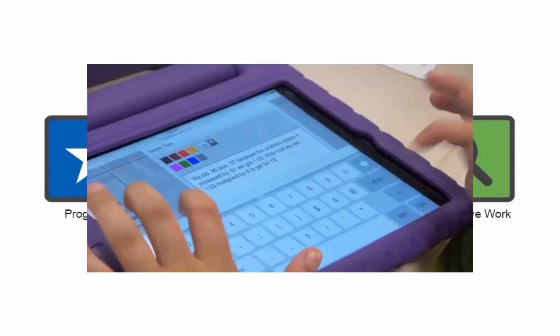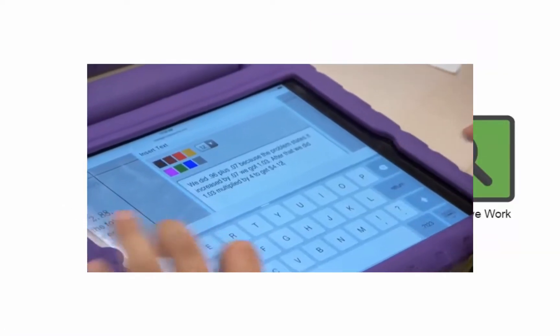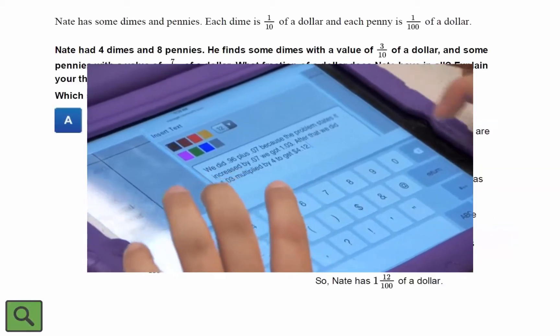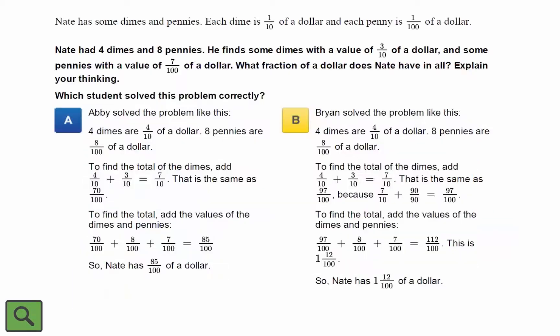The fourth type of problem is a critique and precision problem called investigative work. Students are given a problem and two sample responses that they will evaluate to decide which response correctly answers the question. Students are then asked to provide mathematical evidence to support their answer or to critique the incorrect response.